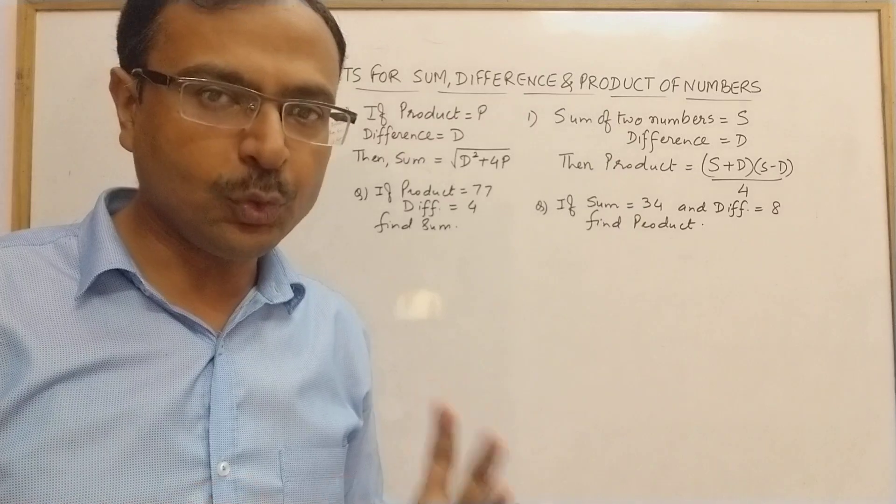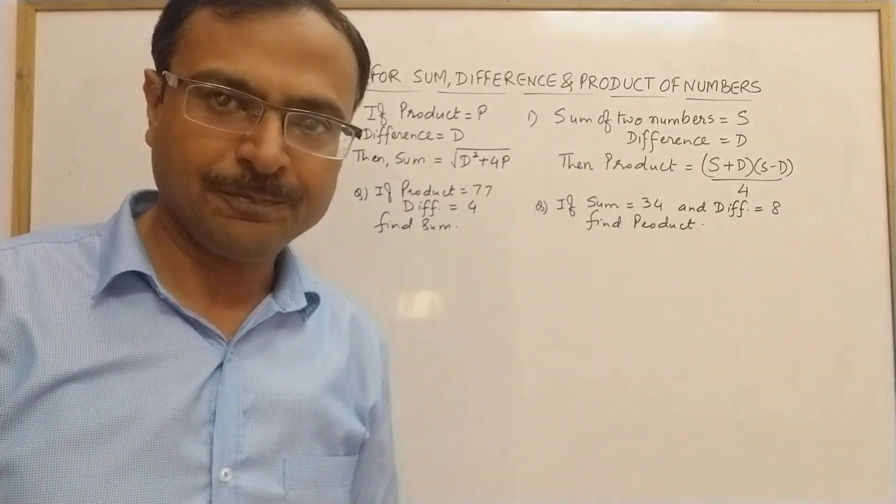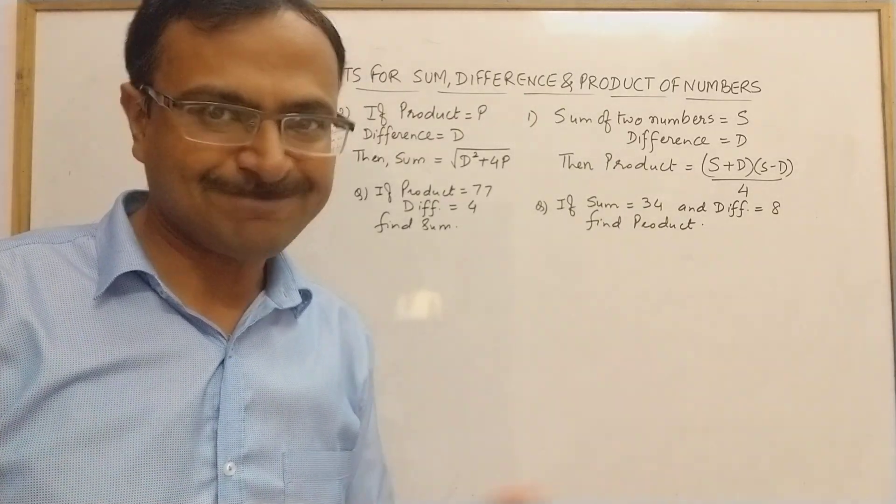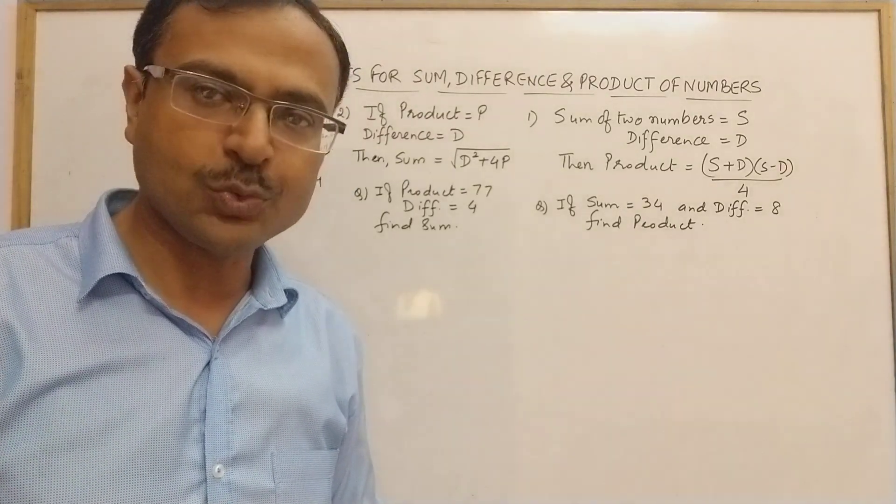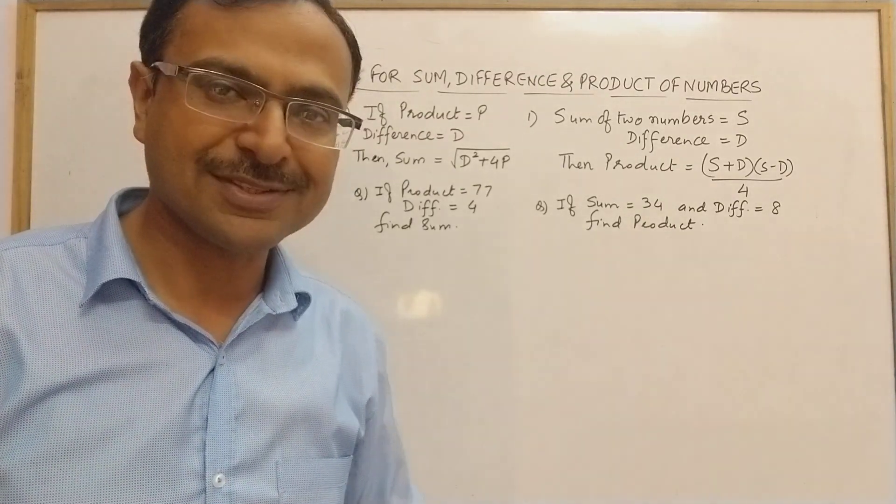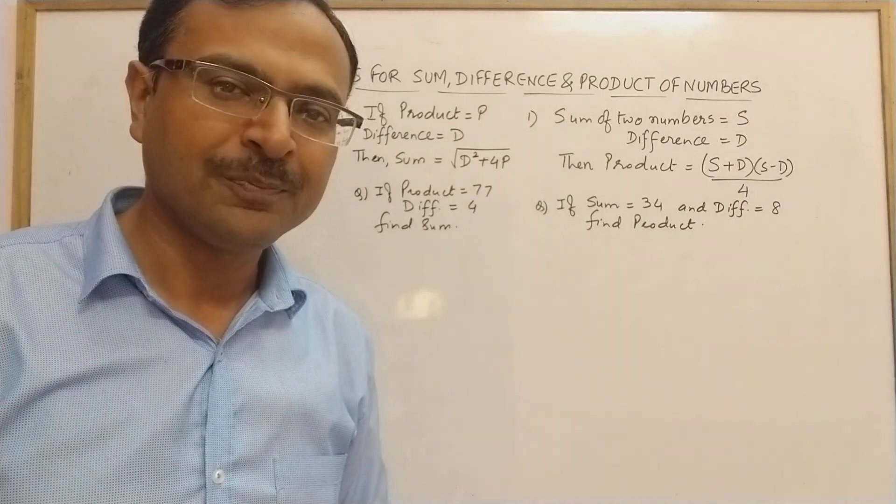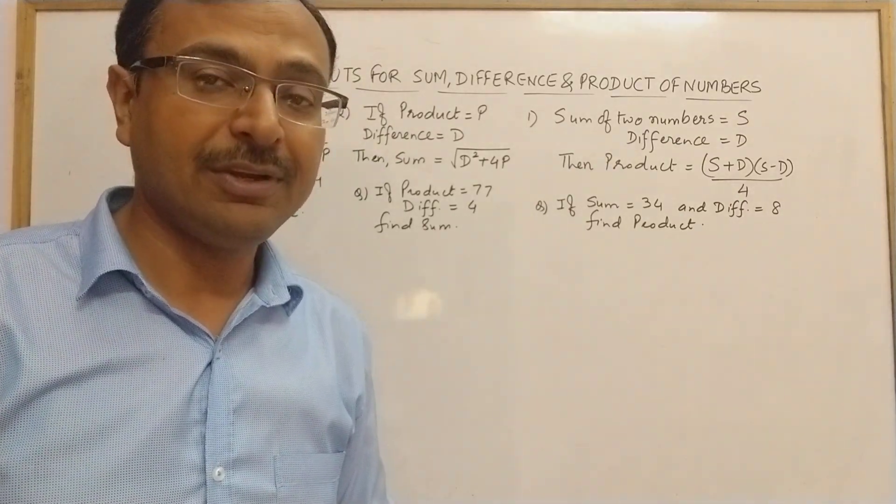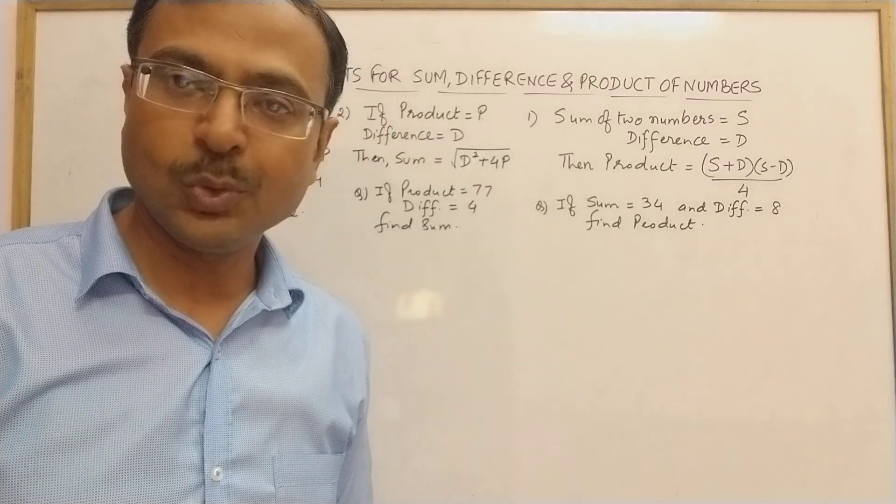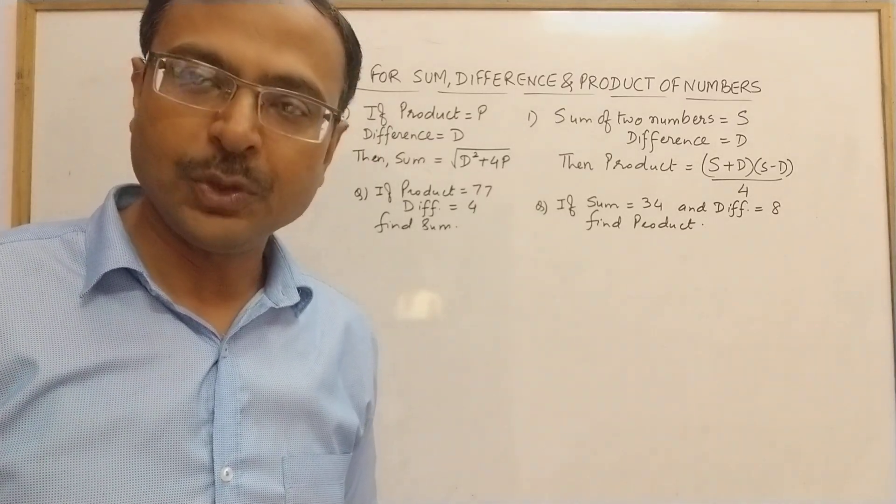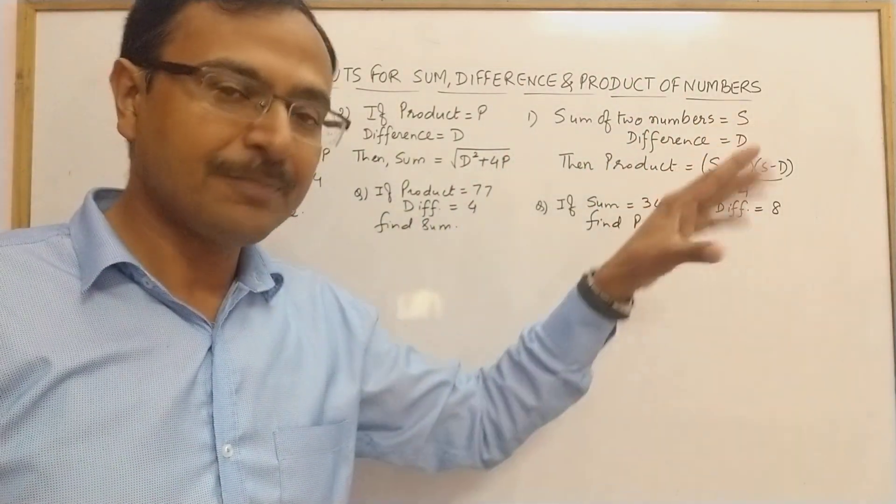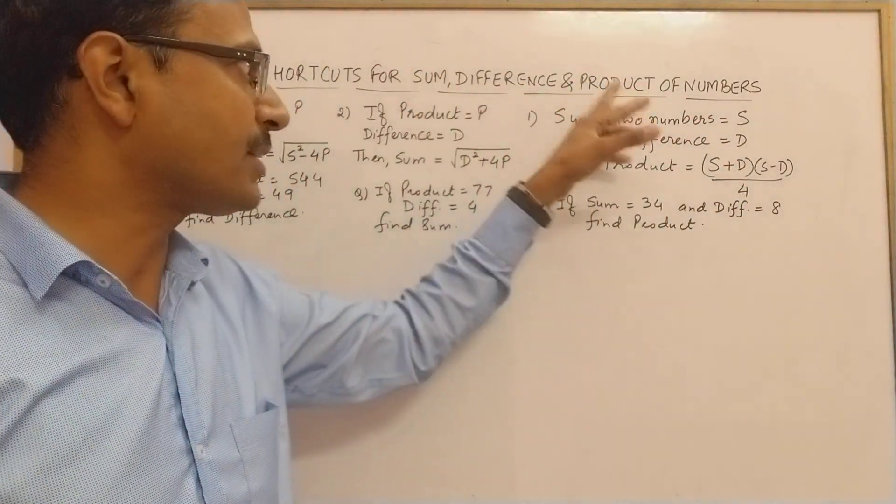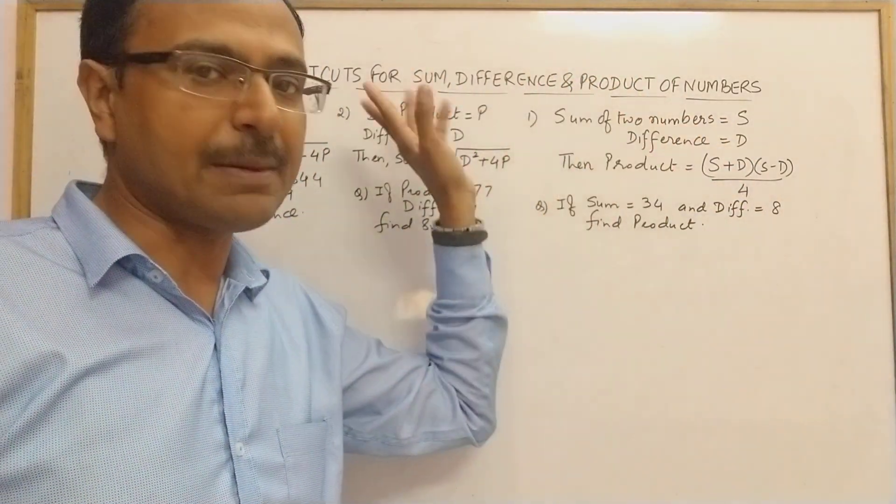If you are given any two of these quantities you can find the third one. You can find sum if difference and product is given, difference if sum and product is given, product if sum and difference is given. I am talking of two natural numbers.